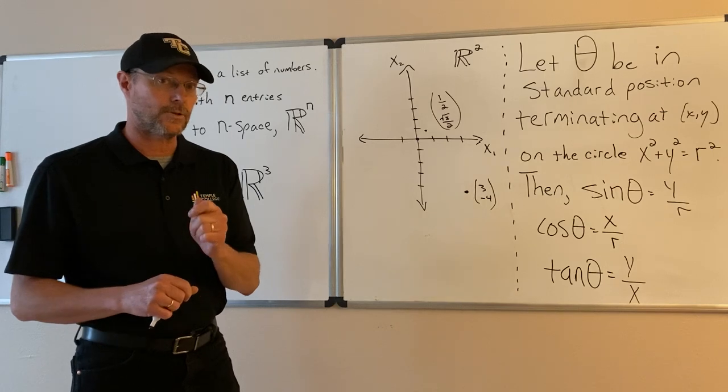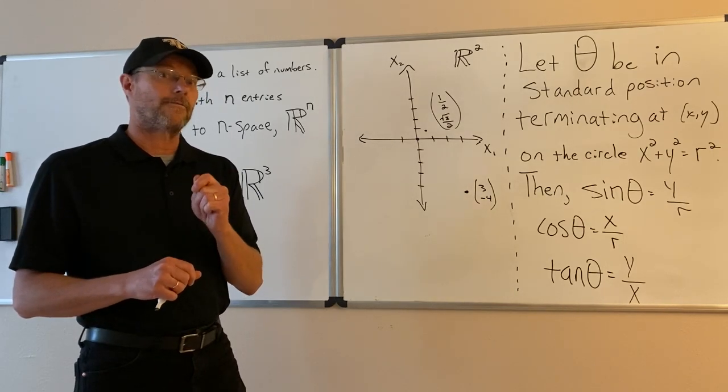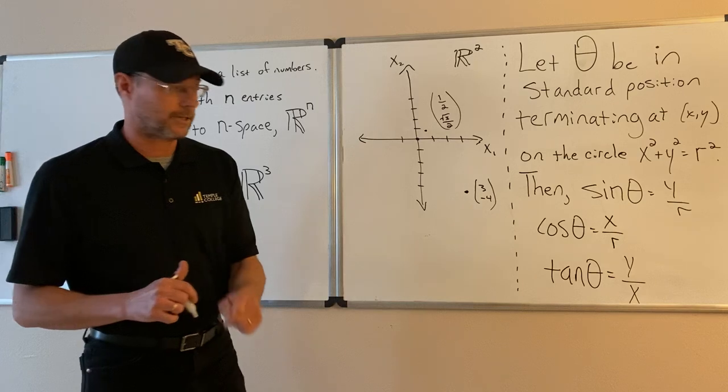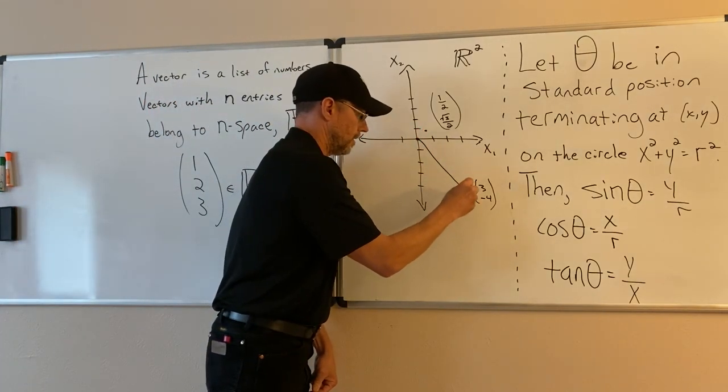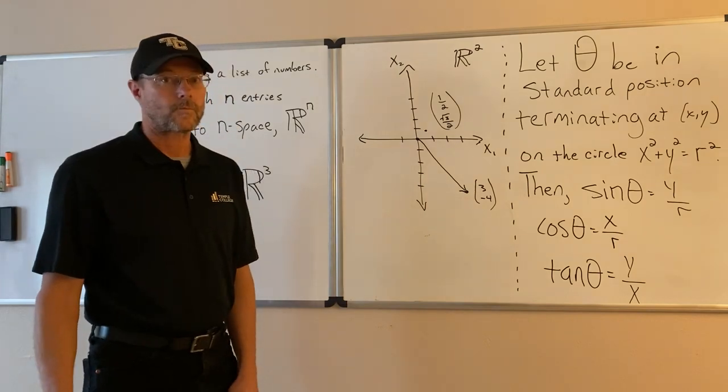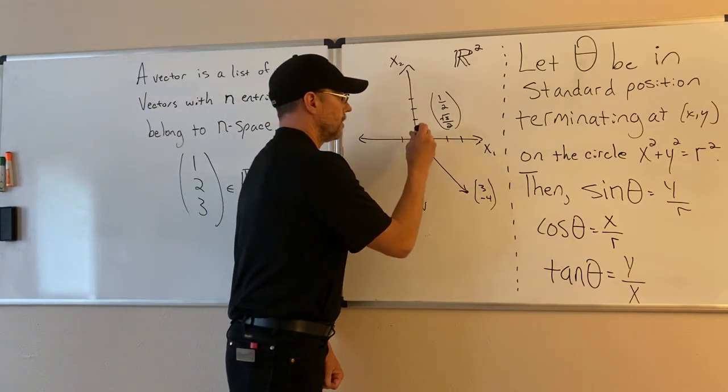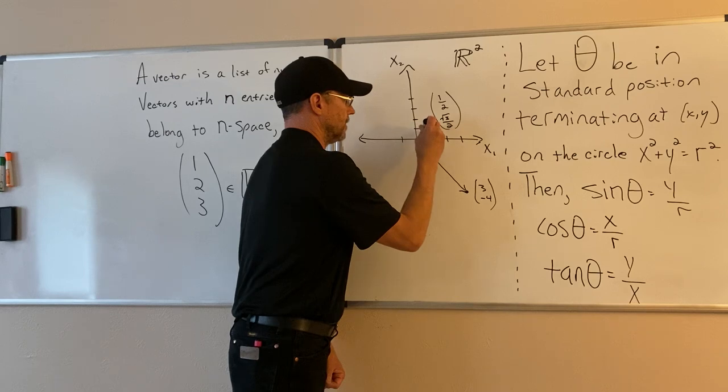The magnitude is the distance from the origin to the vector. So the magnitude is that distance. Or for the other vector I have on the board, the magnitude is that distance.